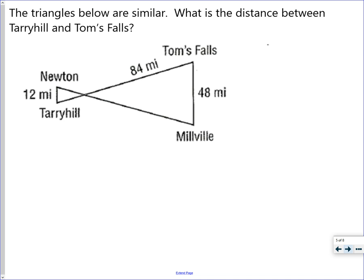The triangles below are similar. So that means corresponding parts are going to match. What is the distance between Terry Hill and Tom's Falls? So I am looking for this piece to get from Terry Hill all the way to Tom's Falls. I know part of it is 84, but the other part is that missing section. So the X right there goes with, in the bigger triangle, the 84. And the 12 in the small triangle, so I'm starting with the small triangle for both of these, matches up with the 48.